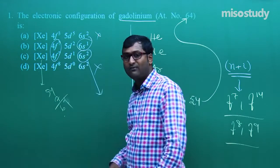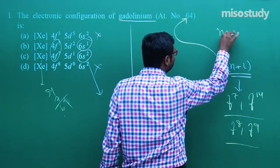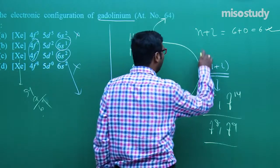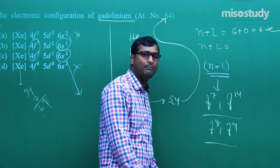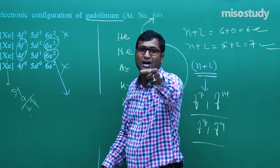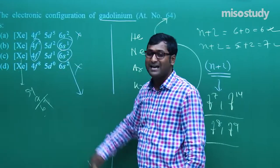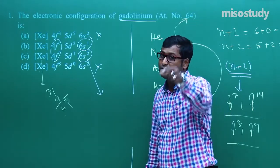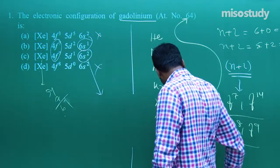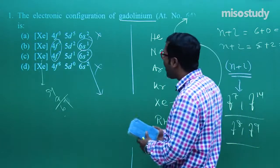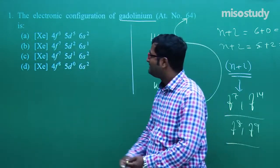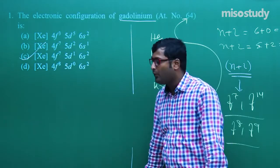Why 6s²? Compare 5d and 6s using n+l values. For 6s: n+l = 6+0 = 6. For 5d: n+l = 5+2 = 7. The sub-shell with the lowest n+l value — which is 6s — fills first, then electrons move to 5d. So comparing all options A, B, C, and D, this explanation confirms the correct answer.